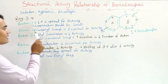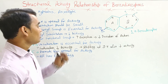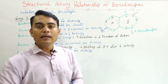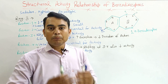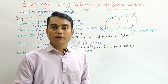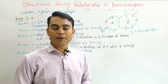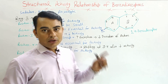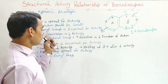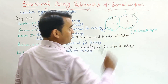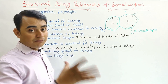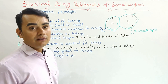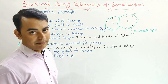Position 2 should have a carbonyl group, because that carbonyl group is important for the binding of benzodiazepine to the receptor. So this carbonyl group is very important for the binding of the drug with the receptor, which leads to pharmacodynamic activity.